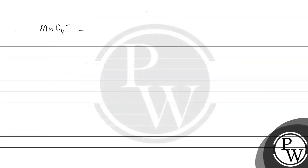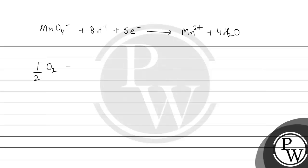Now let us see the reactions given to us. The first reaction: MnO₄⁻ + 8H⁺ + 5e⁻ → Mn²⁺ + 4H₂O. The second reaction: ½O₂ + 2H⁺ + 2e⁻ → H₂O.